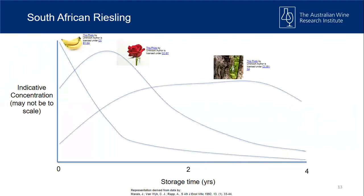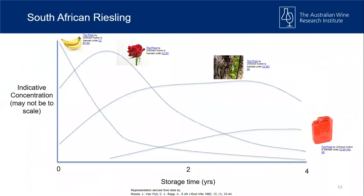Alpha-terpineol — woody and resinous — relies on a few rearrangements and comes from linalool, so it's produced more slowly over time and is a bit more stable. Over a longer period we get a slow increase in TDN.